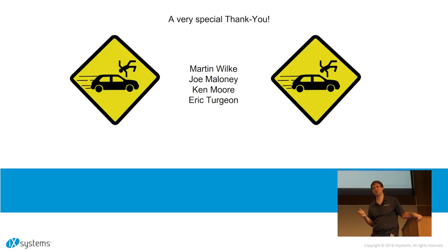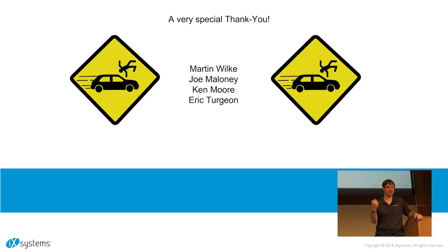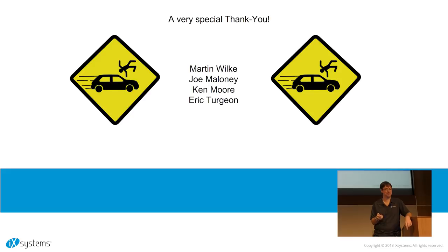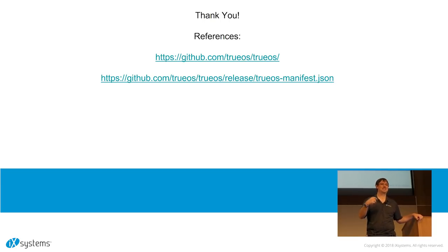Before I end, a very special thank you to a few people who've suffered with me through much of this process. Martin, you've got to be first — I think I've broken you quite a few times. Joe Maloney at IX, our QA manager, helped out quite a bit. Ken Moore, my brother who works on Project Trident, has given a lot of good feedback, and so has Eric Turgeon, the GhostBSD maintainer. Everything's up on GitHub — TrueOS is a downstream fork of the FreeBSD repo with this build system integrated. There's a release manifest directory with a FreeNAS manifest, Plasma manifest, and others showing wildly different images built using the same system.